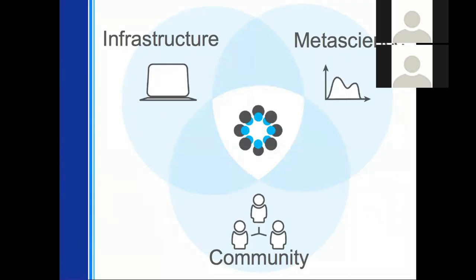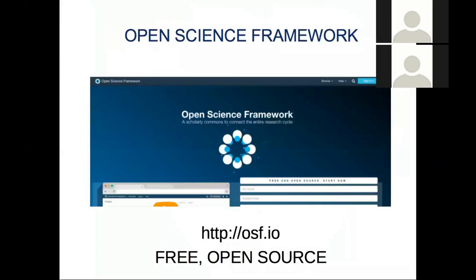All of which is made significantly easier by our infrastructure team, which is the largest team here at the Center for Open Science. Their mission is to build tools — most specifically the Open Science Framework — that make actually implementing these best practices possible for people in the community and make it as easy as possible for that to happen.